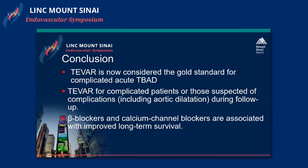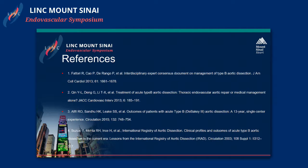In conclusion, TEVAR is now the global standard for complicated acute type B aortic dissections, both abdominal and thoracic. Patients with complicated dissections suspected of growth and enlargement should be followed closely and repaired. Beta blockers and calcium channel blockers are the cornerstones of therapy for patients who present with these dissections. Thank you.